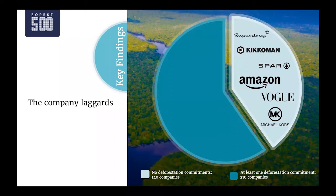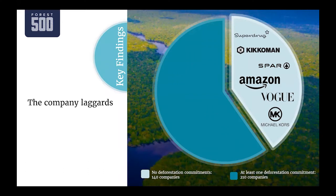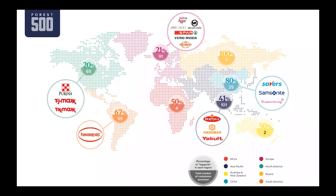Although there are some relative leaders among the 350 companies, there are many more laggards holding the rest back. Voluntary deforestation commitments have failed to drive the change needed. Out of the 350 companies assessed this year, 140 did not have any deforestation commitments for any of the commodities they are exposed to — showing no change since 2018. Recognizable laggards include CK Hutchinson Holdings, which owns Superdrug; Capri Holdings, who own Jimmy Choo and Versace; and Amazon.